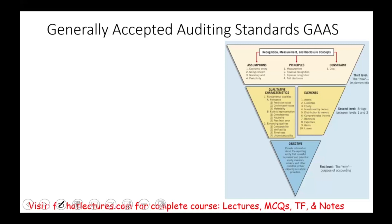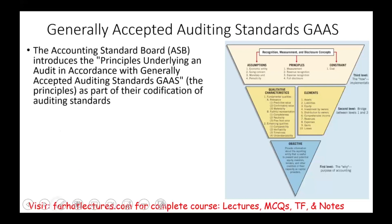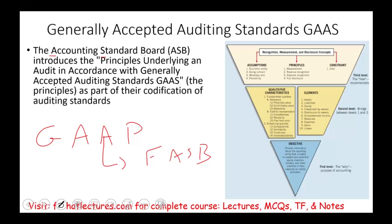GAAS sounds a little bit familiar to another term we learned before in accounting called GAAP — G-A-A-P. GAAP is for accounting: generally accepted accounting principles. Here we're dealing with auditing. For GAAP, FASB sets GAAP. For GAAS, the accounting standard board introduces the principles underlying an audit in accordance with generally accepted auditing standards, as part of their codification of the auditing standards.